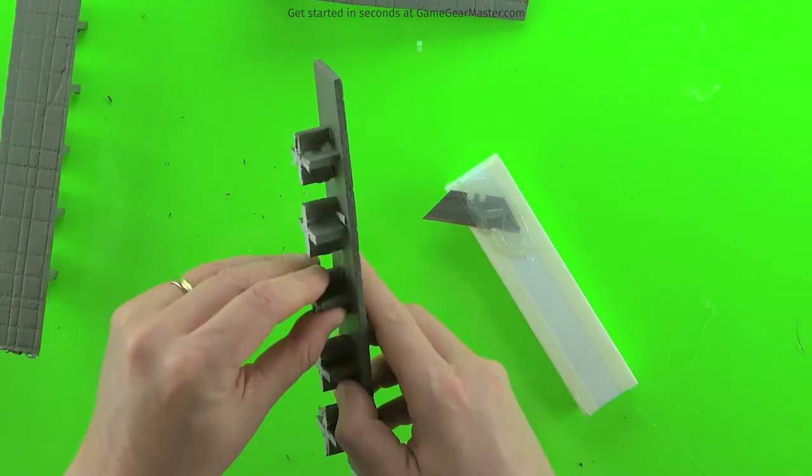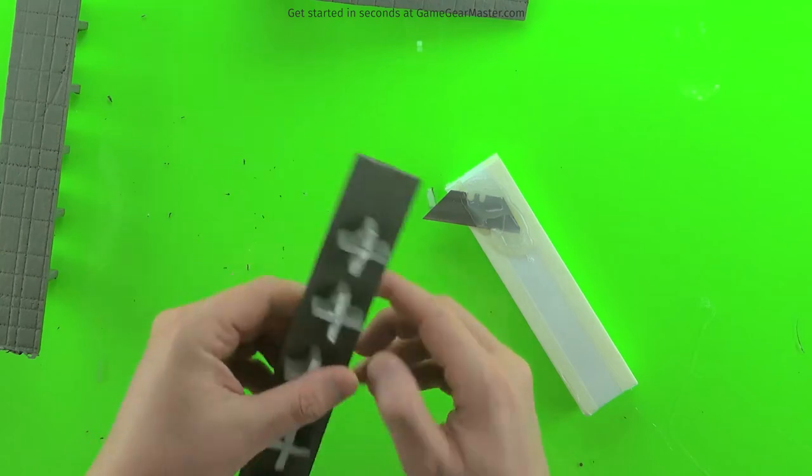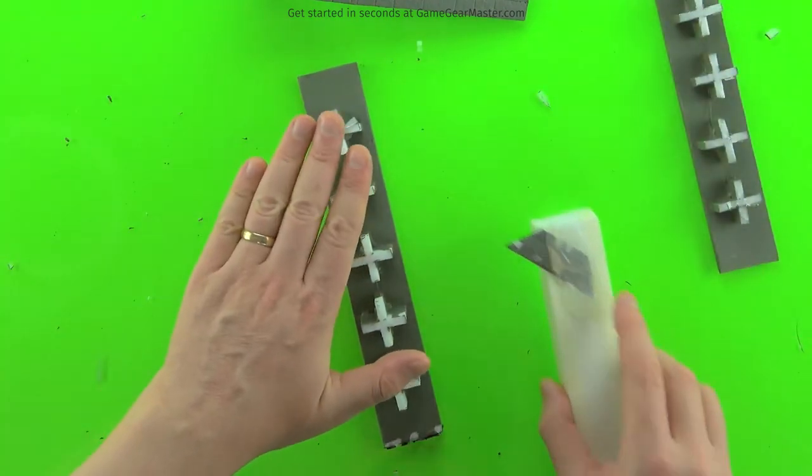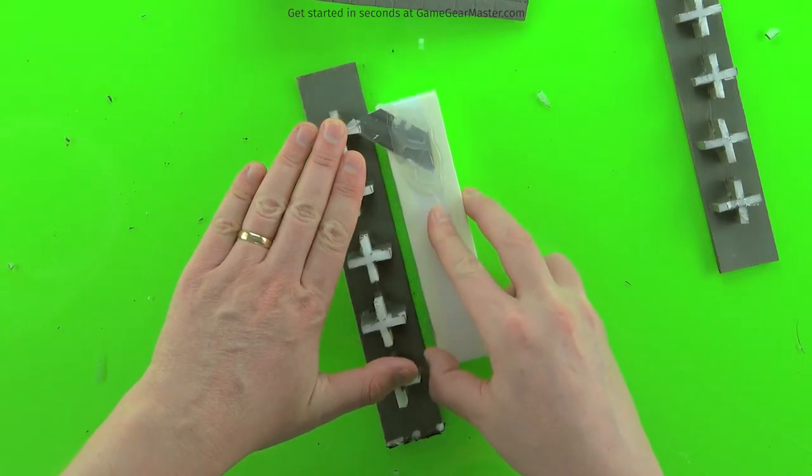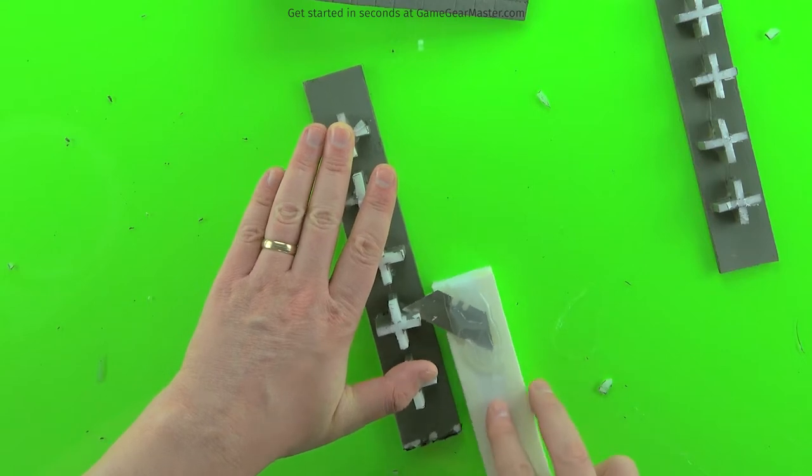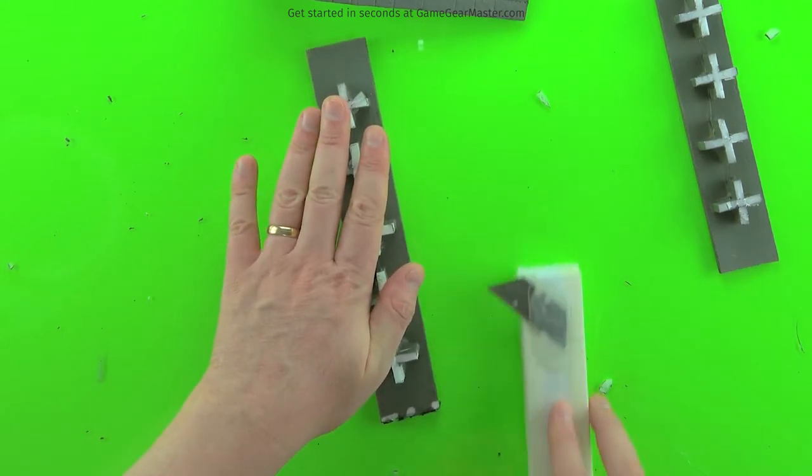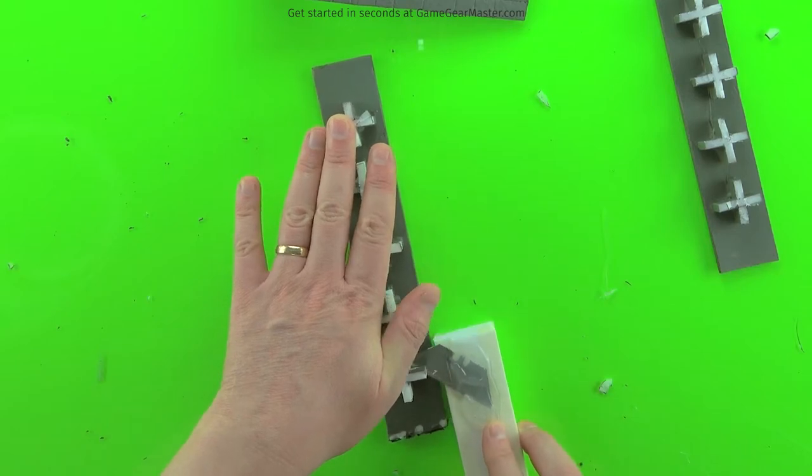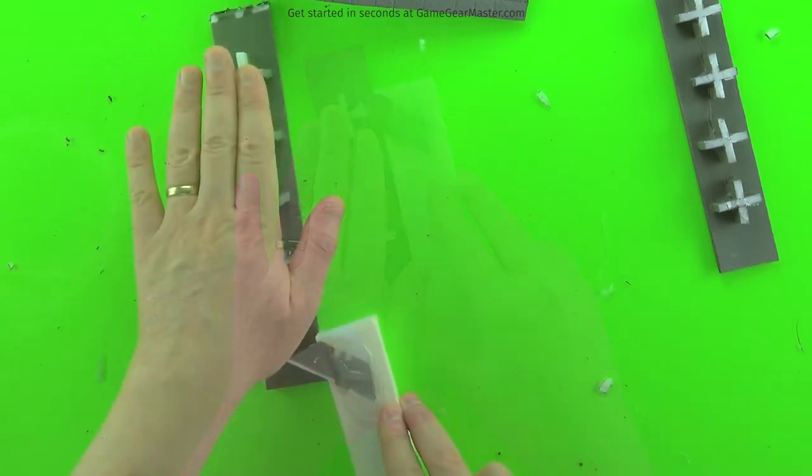Now if you want some added durability, you can add some Titebond wood glue to the ends of those plugs there, but you may not need them. Here we're just doing the other side. Please be careful with your hands when you do this. Lay them flat on top of the cross connectors you're cutting. Make sure none of your fingers hang down below the tops of the cross connectors.